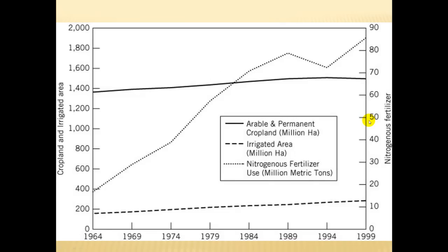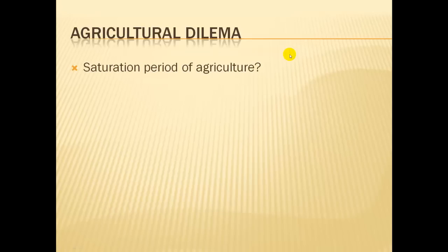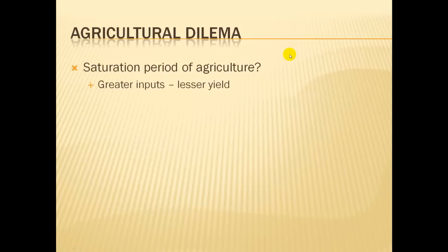Looking at this another way, fertilizer use has gone up consistently, irrigation area has gone up a little bit, but permanent cropland has pretty much stayed the same if not gone down. We're just putting a lot more external inputs into cropland to get higher yields. The dilemma being visited repeatedly — seen in the Project Home video and mentioned in Food Inc. — is: are we in a saturation period of agriculture? Have we reached a point where agriculture is no longer sustainable and we're entering a period of diminishing yields? That is up for debate.